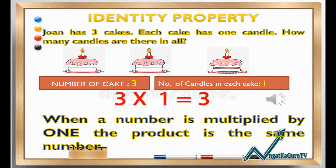The next property is the identity property of multiplication. Here is the problem: Joanne has three cakes and each cake has one candle. How many candles are there in all? The number of cakes is three, and the number of candles in each cake is one. Therefore, 3 times 1 equals 3. When a number is multiplied by one, the product is the same number.